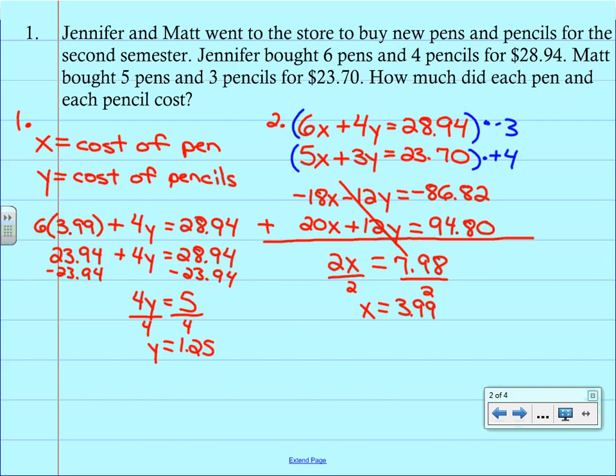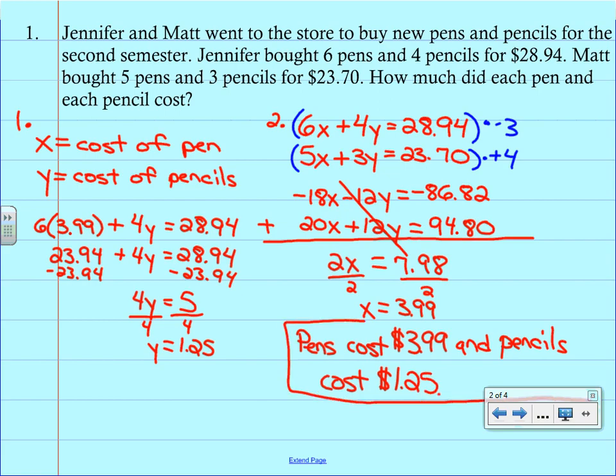And again, we're dealing with money, so that's good to have decimals. Just like we did with substitution, you want to make sure that you have an answer statement. So you would just finish out by saying pens cost $3.99 and pencils cost $1.25. And our first problem is done.